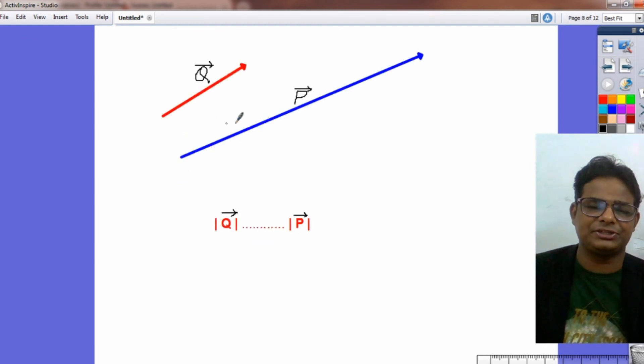Now, take two vectors P and Q. Obviously, the length of P is greater than length of Q. That means the magnitude of P is greater than magnitude of Q.